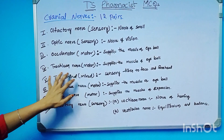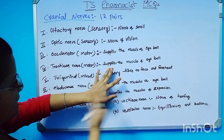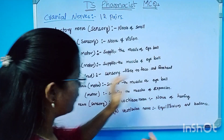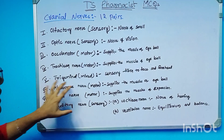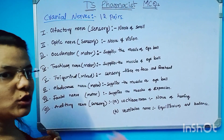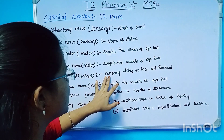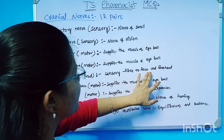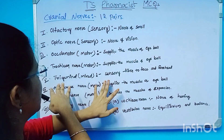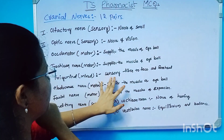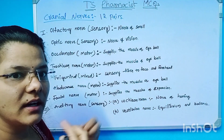The fourth cranial nerve is also a motor type and also supplies the muscles of the eyeball. The fifth cranial nerve is the trigeminal nerve. It is mixed — it has both sensory and motor qualities — with sensory fibers to the face and forehead, and motor for sensory actions.